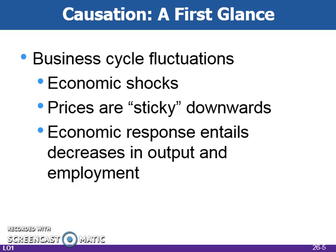Prices can be inflexible downwards, which means that if total spending unexpectedly decreases, firms cannot lower their prices, so the firms will end up selling fewer units of output. These sticky prices result in slower sales, which will cause firms to cut back on production. This causes GDP to fall, and then employment will fall because of the reduced demand for output, and an economic contraction will occur.